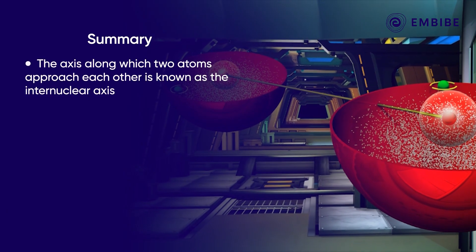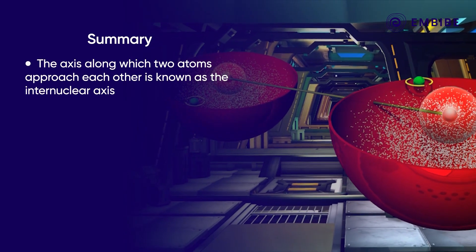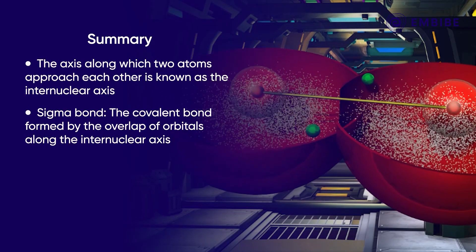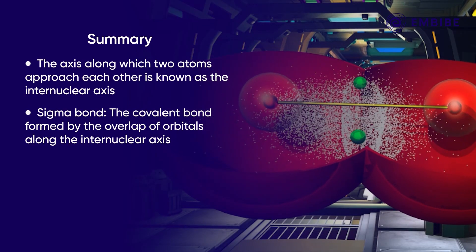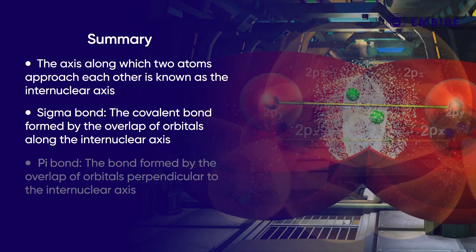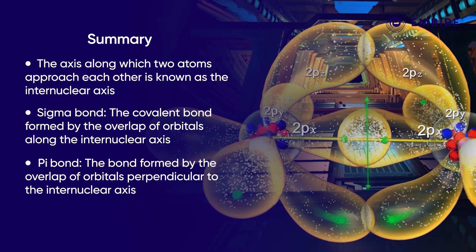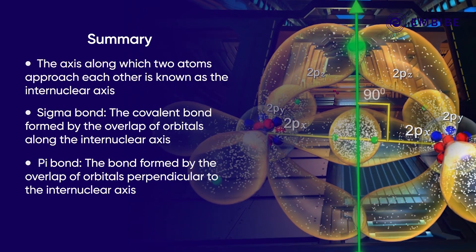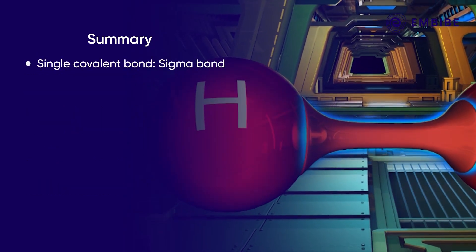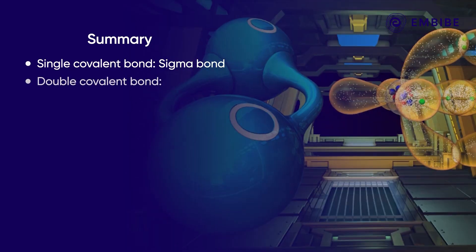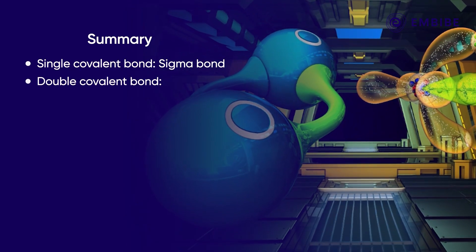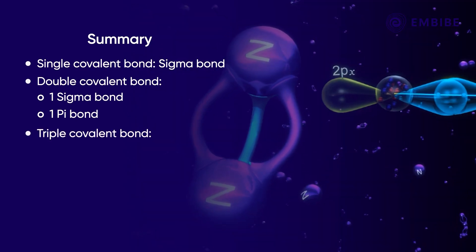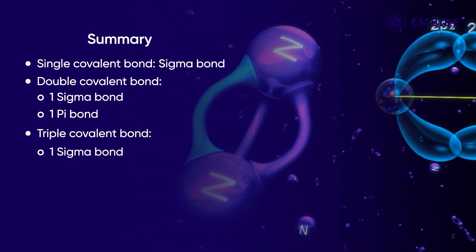To summarize: the axis along which two atoms approach each other is the internuclear axis. A covalent bond formed by overlap along the internuclear axis is a sigma bond; overlap perpendicular to it forms a pi bond. A single covalent bond is a sigma bond. A double covalent bond consists of one sigma and one pi bond. A triple covalent bond consists of one sigma and two pi bonds.